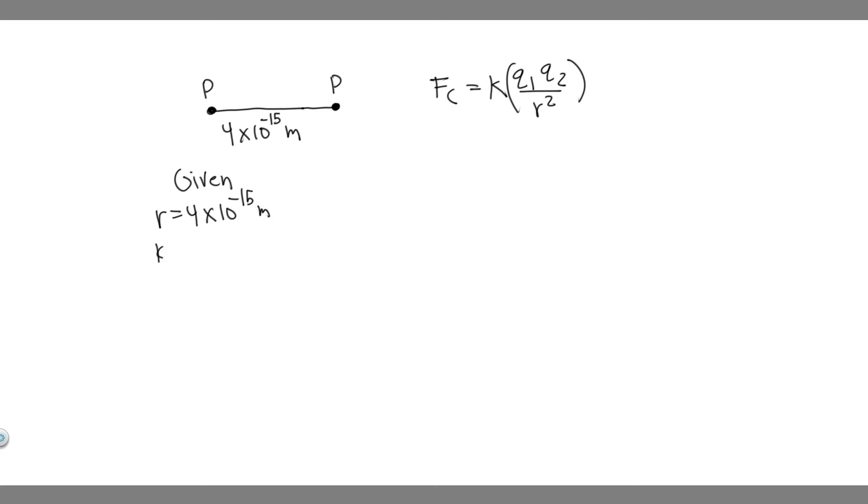So K is just a constant, which is something you just have to memorize. And so what K is, it's basically 8.988 times 10 to the 9. And then the units are Newton meters squared over Coulomb squared. So that's K. So we have K and R now.